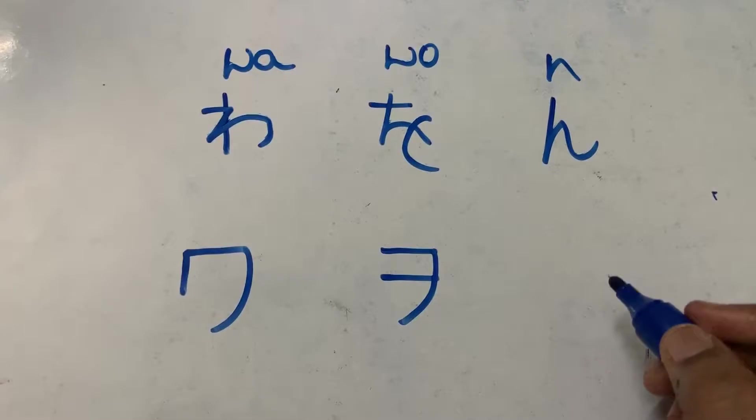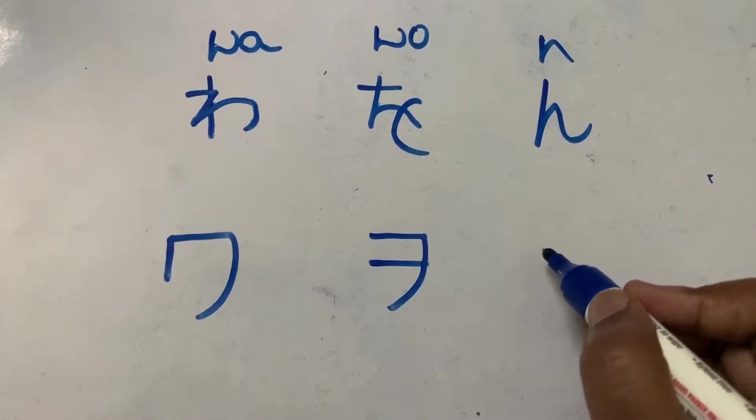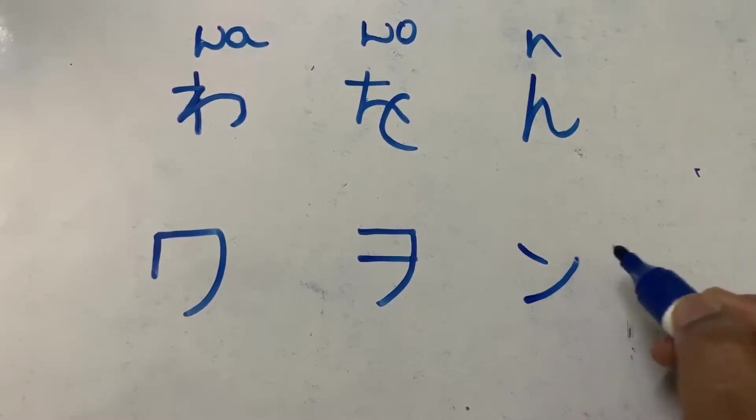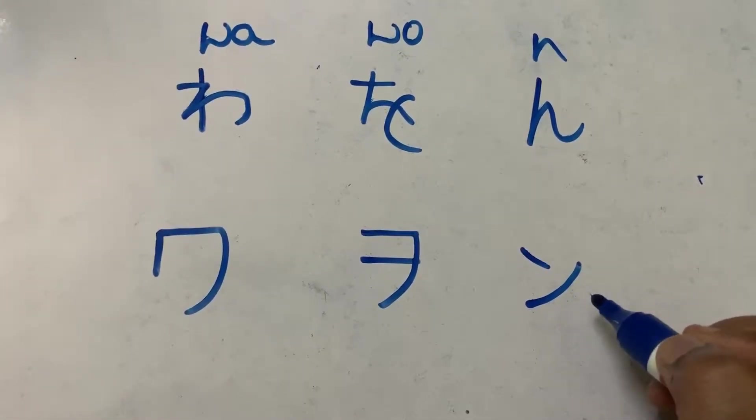And finally katakana n. The first stroke and the second stroke. This is katakana n.